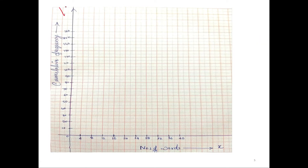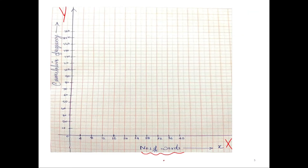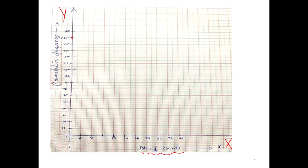I have plotted the y-axis, which is my cumulative frequency, and the x-axis that's going to give the number of words. You can see the x-parameter we are counting is the number of words, so you write the same label here. Since there is no particular scale mentioned for your axis, I have taken it so that for cumulative frequency the highest value is 150, and for my x-axis it's 32, so multiples of 4 up to 40.